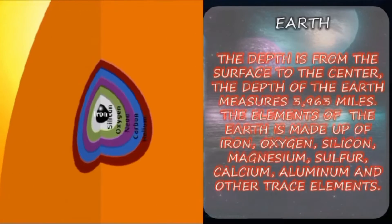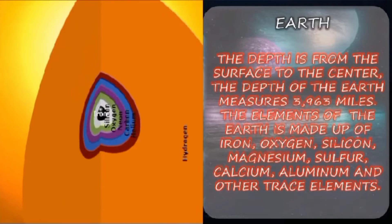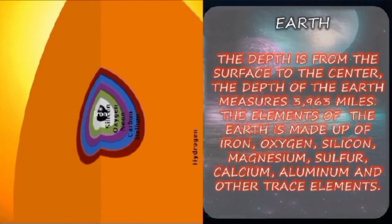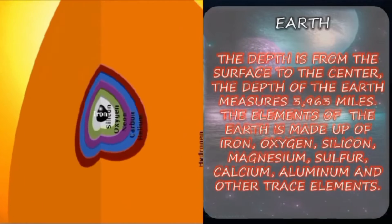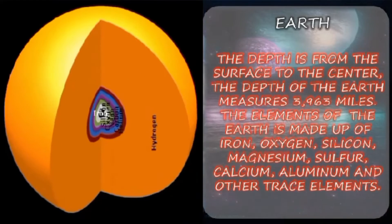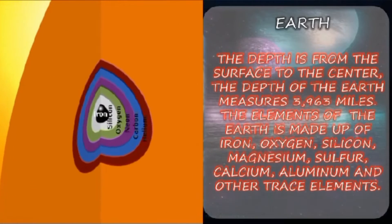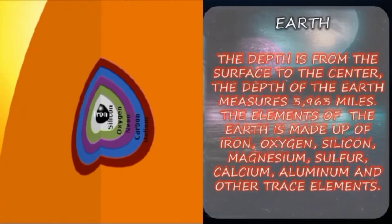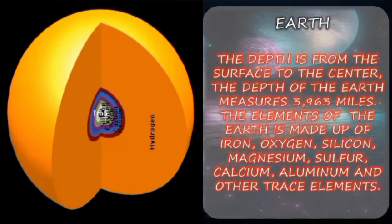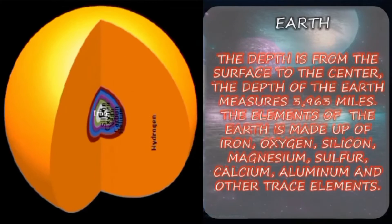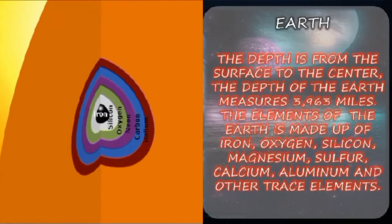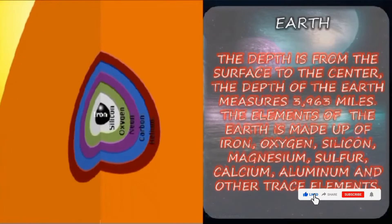The depth of the Earth. The depth is measured from the surface to the center. The depth of the Earth measures 3,963 miles. The elements the Earth is made up of are Iron, Oxygen, Silicon, Magnesium, Sulphur, Calcium, Aluminium, and other trace elements. In the slide, you can see the center in black representing iron, then silicon in white, oxygen in light green, neon in violet, carbon in blue, helium, and entirely covered by hydrogen.